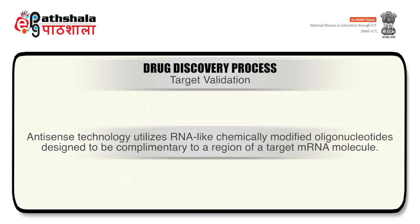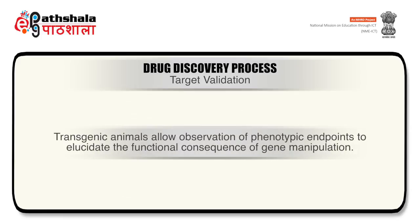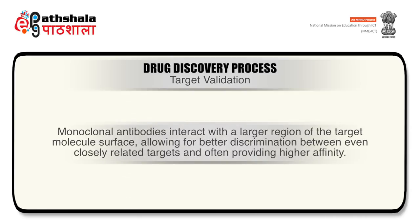Antisense technology utilizes RNA-like chemically modified oligonucleotides designed to be complementary to a region of the target mRNA molecule. Transgenic animals allow observation of phenotypic endpoints to elucidate the functional consequence of gene manipulation. Monoclonal antibodies interact with the larger region of the target molecule surface, allowing for better discrimination between even closely related targets and often providing higher affinity.